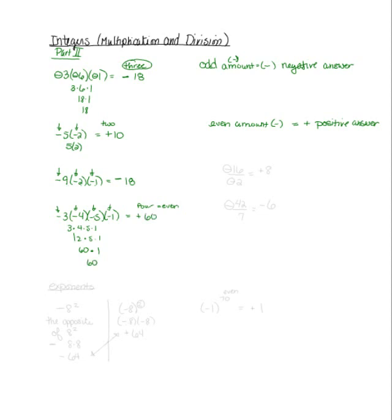Once you figure out what the sign is, you just do the multiplication. Division rules are exactly the same. When I have negative sixteen divided by negative two, I'm going to get a positive answer because there are two negative signs — that's even. Sixteen divided by two is eight, so the answer is positive eight. If I had negative forty-two divided by positive seven, there's only one negative sign, which is odd, so I get a negative answer. Forty-two divided by seven gives me negative six.